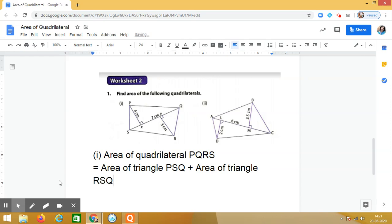Fine. So what is the area of triangle PSQ? Yes, use the formula half into base into height, that is SQ into PX. So SQ is 7, SQ into PX is 4.